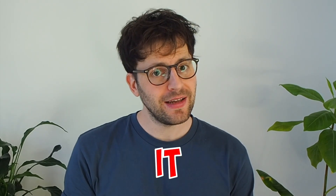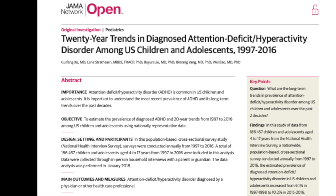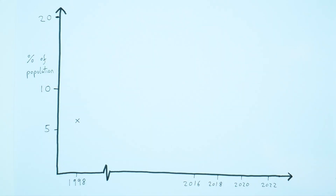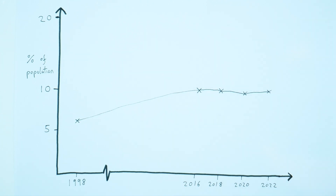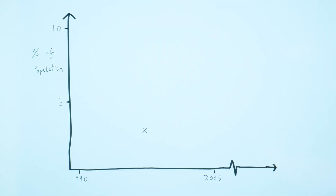But how common is it? This study showed that for children in 1998 it was about 6.1%, and by 2016 that number had risen to 10.2%. A subsequent study showed levels remained at 10.2% in 2018, going down to 10.1% in 2020 and then up to 10.4% in 2022. This represents a large increase across the last 25 years but it's not as much as I thought. For adults, this study showed that the global prevalence grew from 2.5% in 1996–2005 up to 6.7% in 2020.